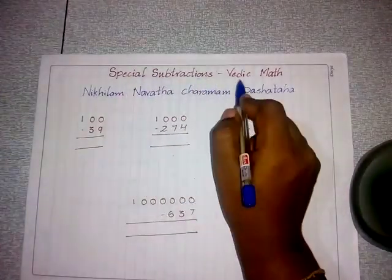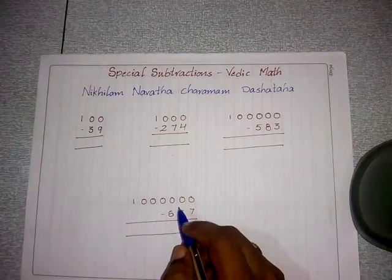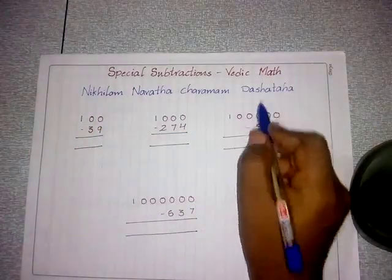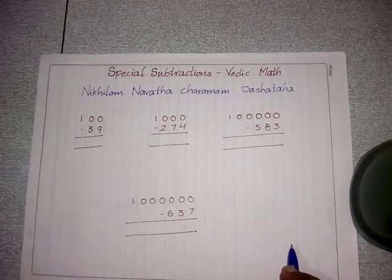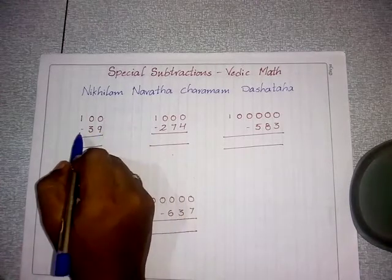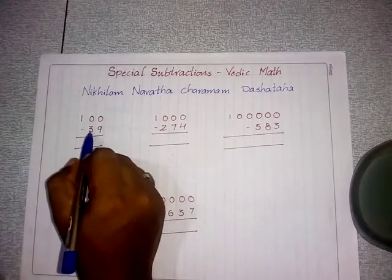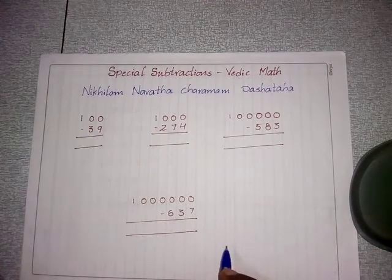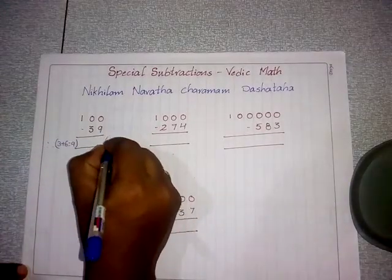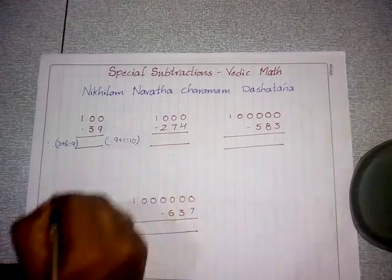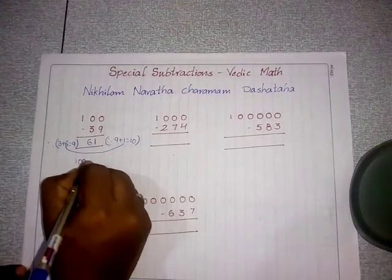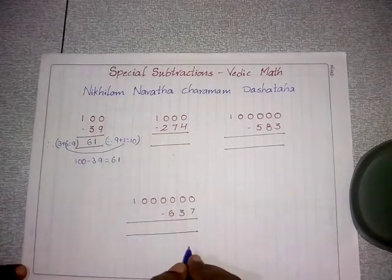Now let's go with special subtraction in Vedic maths. This technique is called 'Nikhilam Navatascharamam Dashatah.' Start with a small example: 100 minus 39. Focus on the subtraction number 39. Start from the left — add 10 to 9 in the units place, so: 3 plus 6 equals 9, and 9 plus 1 equals 10. The answer digits are 6 and 1, so 100 minus 39 equals 61.